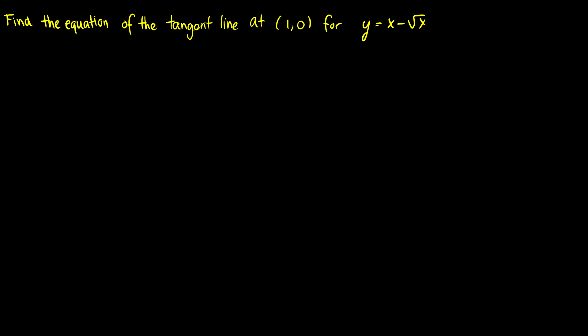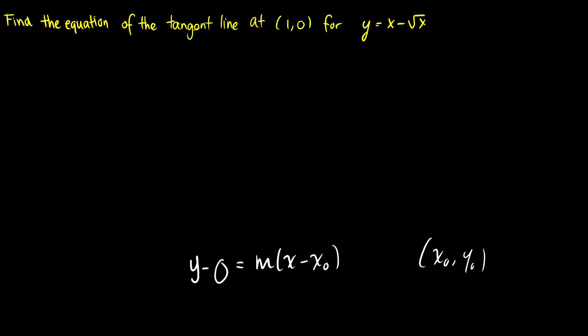In this video we're going to find some equations of tangent lines. For the first one, we want to find the equation of the tangent line at (1, 0) for y equals x minus the square root of x. The equation of the tangent line always looks like y minus y₀ equals m times x minus x₀, where y₀ and x₀ correspond to a point (x₀, y₀). So in this case our y₀ is 0 and our x₀ is 1.